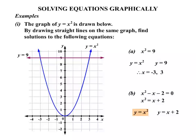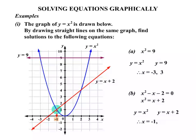y equals x squared is already drawn, so nothing further needed there. For y equals x plus 2, we need to draw that straight line. If you're not sure how to draw it, review previous work or plot a few points from a table. We get that line drawn and label it. The first intersection point occurs when x equals minus 1 — that's our first solution. The other intersection point occurs when x equals 2. So: x equals minus 1, or x equals 2.